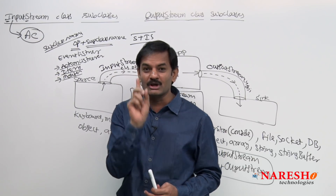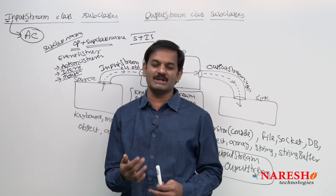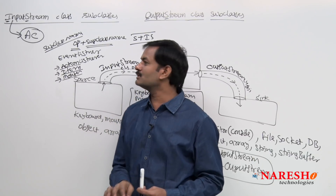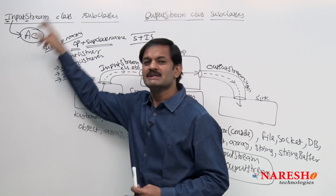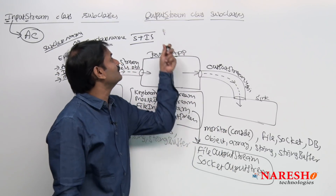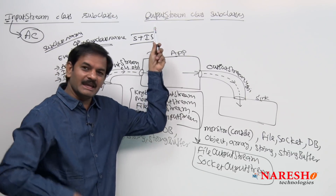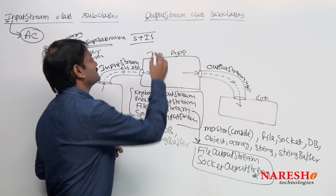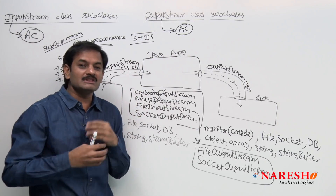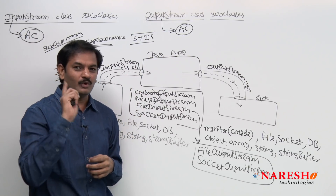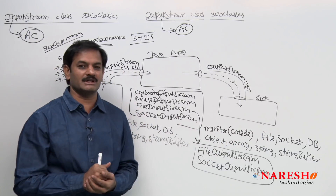It is abstract class, because only the read method we have to declare. Remaining methods are implemented in common. Hence, input stream class is abstract class. The same point is applicable to output stream class also. Output stream class is abstract class because output stream provides operations, and among these 6 operations, one operation logic only changes from one destination to another destination.